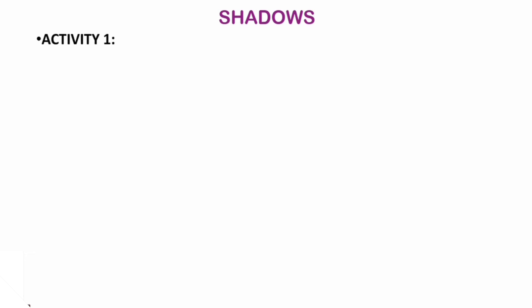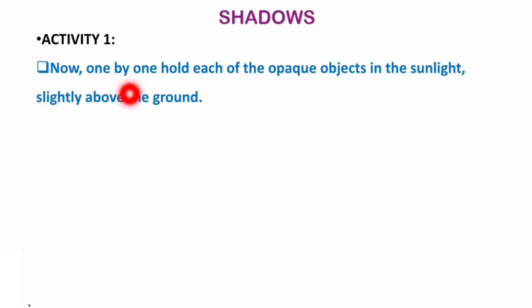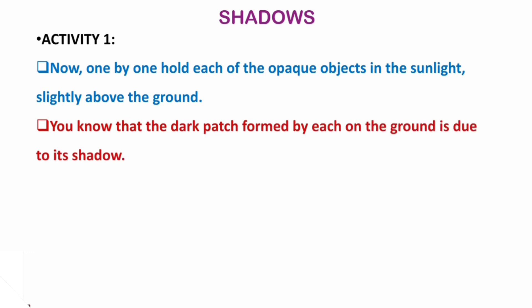Next topic is shadows. Let's discuss an activity. One by one, hold each opaque object in the sunlight slightly above the ground. What you will observe is a dark patch formed on the ground — this is due to the shadow of the object. The dark patch on the ground is what we call a shadow.